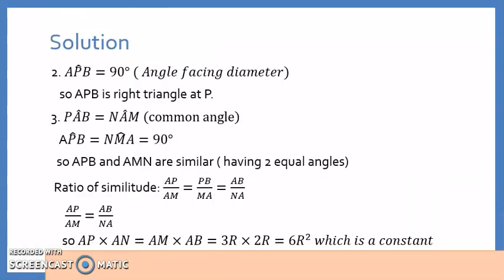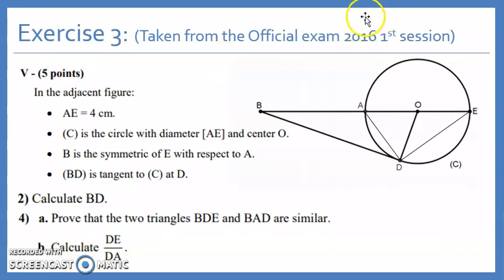Another exercise, it's taken from the official exams, 2016 first session. So pause the video and read the given carefully. This is a circle of center O and AE is 4 cm by given. And B is symmetric of E with respect to A. This means that A is the midpoint of EB. And you have that BD is tangent to C at D. And remember when you have a tangent, this means that it's perpendicular to the radius. So you can immediately notice that BD is perpendicular to OD.